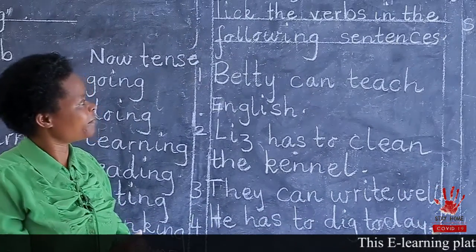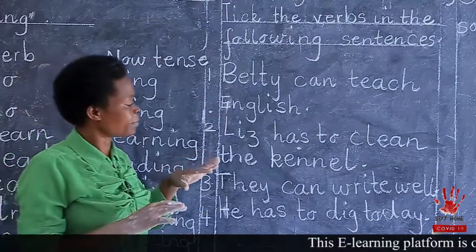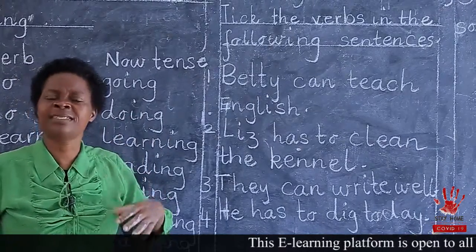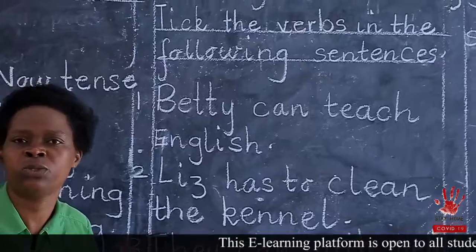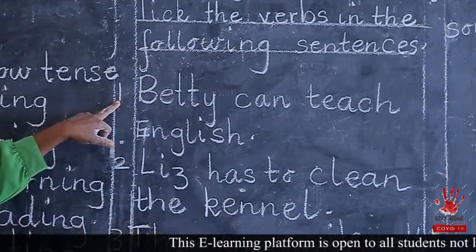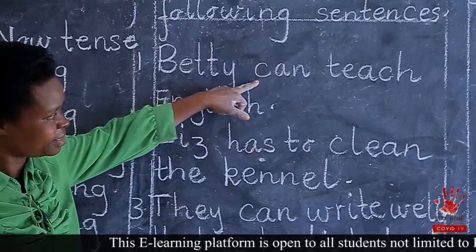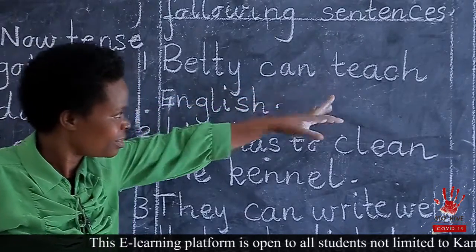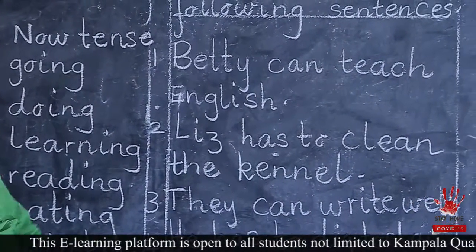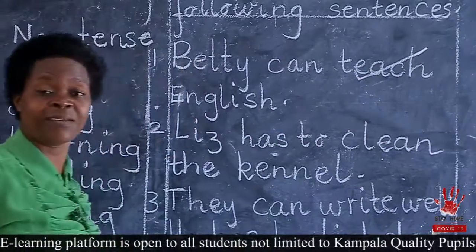Take the verbs in the following sentences. You are supposed to read sentence per sentence, then you identify which is a verb, what is that person doing in that sentence. For example, number one: Betty can teach English. Is Betty a verb? Is teach a verb? Then English — which one is a verb? Someone has told me, teach. Then correct. Teach is a verb.